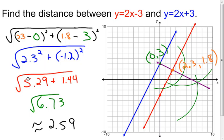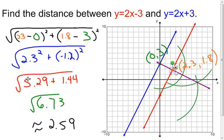You may have come up with a slightly different value for the intersection point, which would then change this answer. In a problem like this I'm not going to get too picky — as long as you come close with your two point three, one point eight, I'm going to be happy.